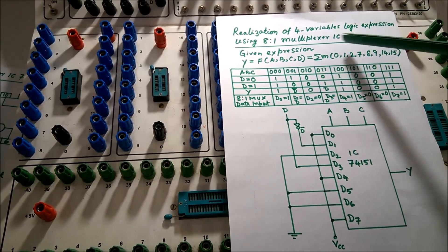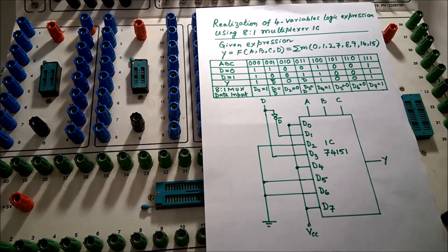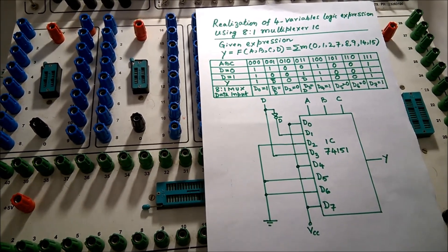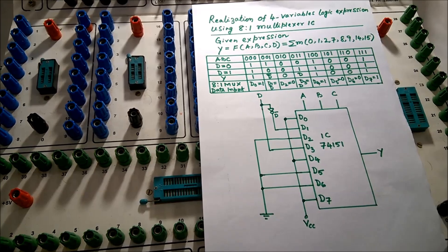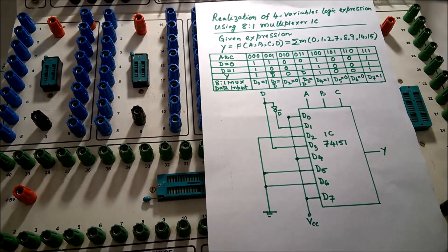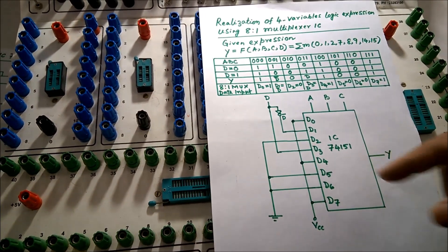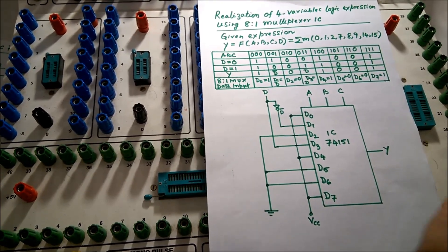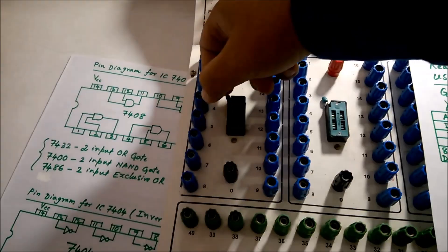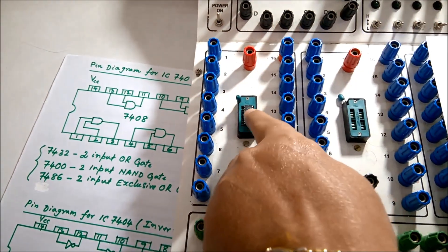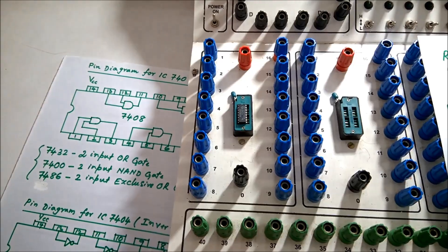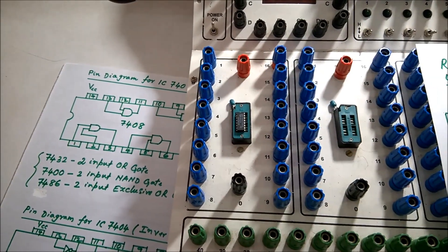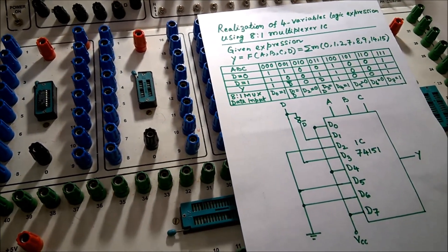We are realizing a 4-variable logical expression with an 8-to-1 multiplexer. The design has already been done and now we proceed to connections. You have the multiplexer IC, which is the 74151 — a 16-pin IC. Place it with the notch upside. We also require the NOT gate IC, which is the 7404, so place that on the board as well.